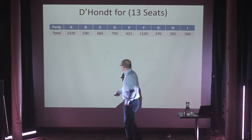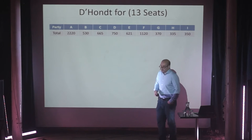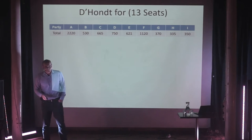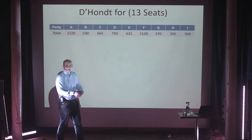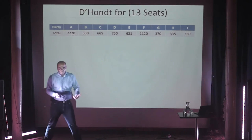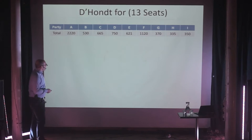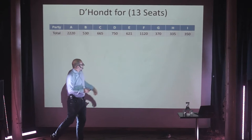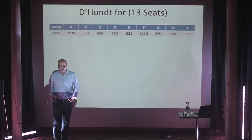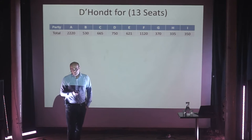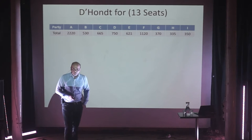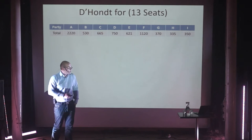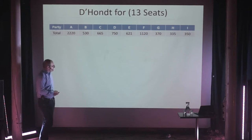Here are a bunch of parties A to I, each with a number of votes. Let's say it's the European Parliament election in Denmark and we have 13 seats to give away. How shall we do this? That was a mathematical question that kept mathematicians interested in elections and social choice busy for a long time. They came up with an algorithm called the D'Hondt algorithm.